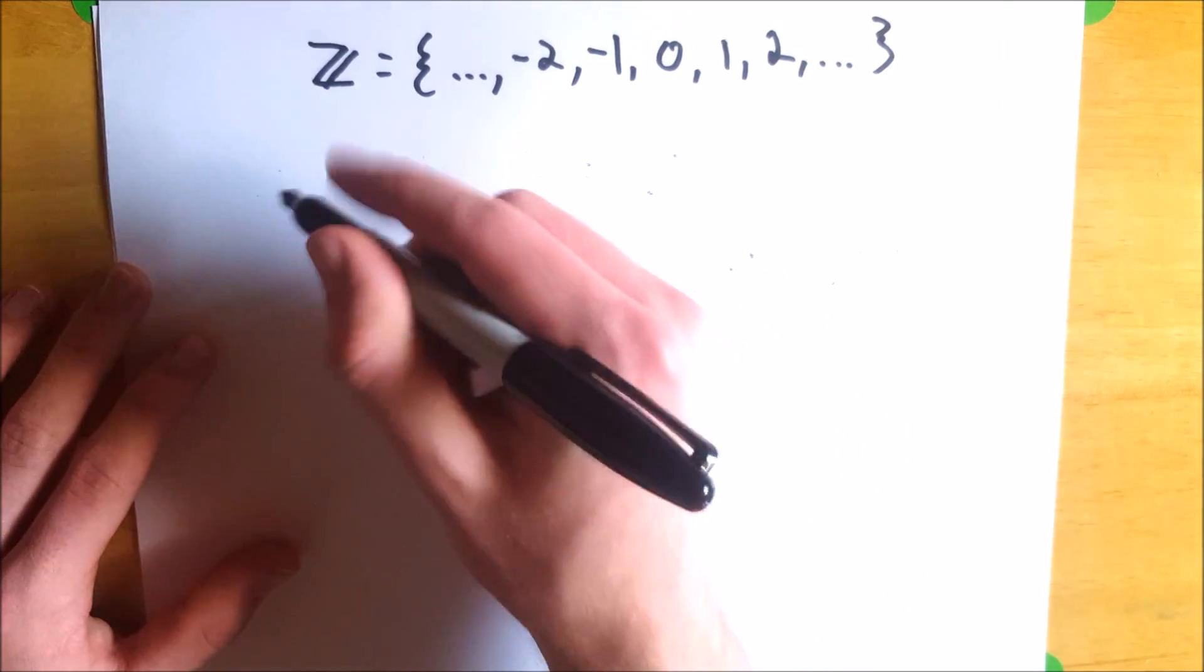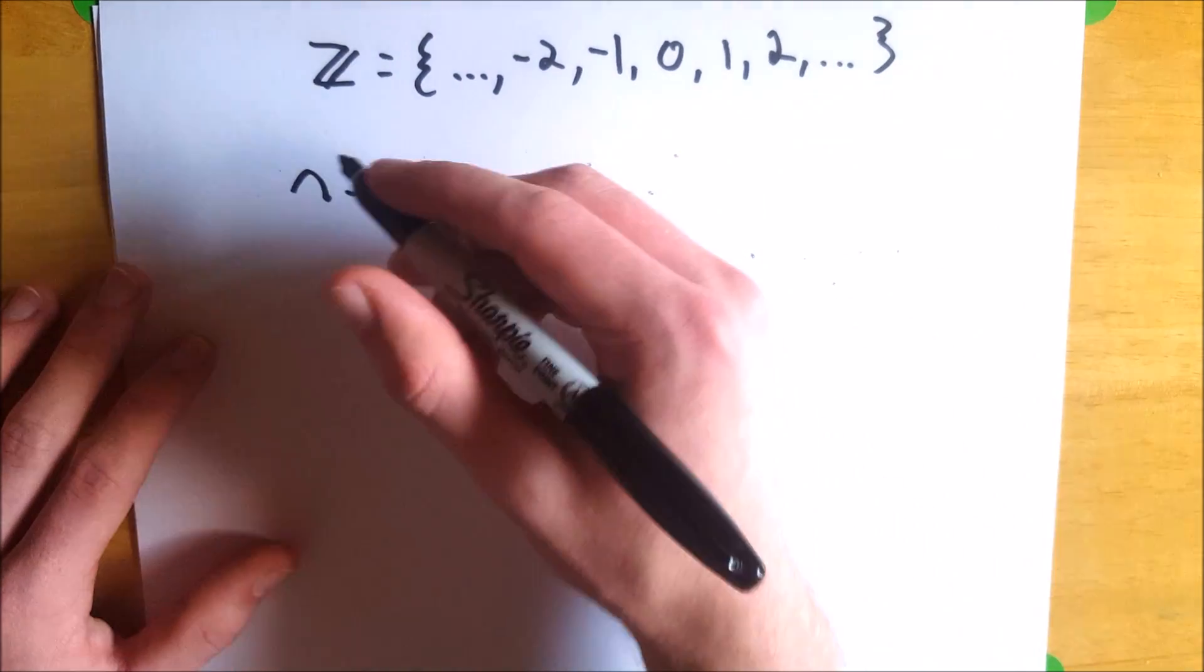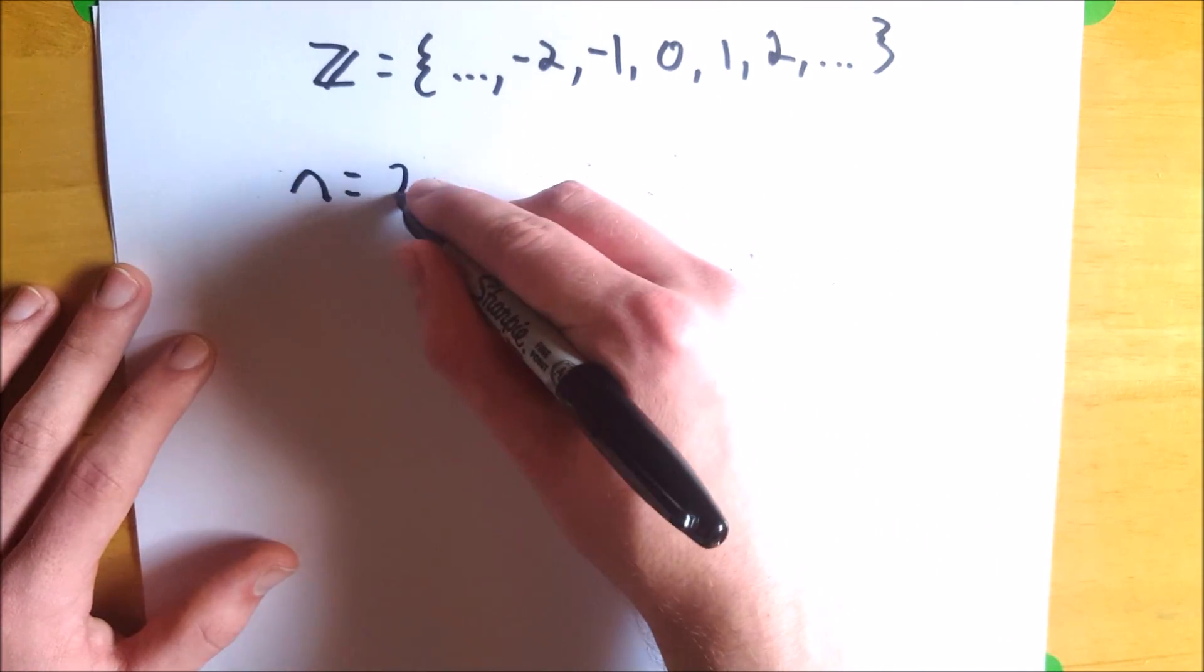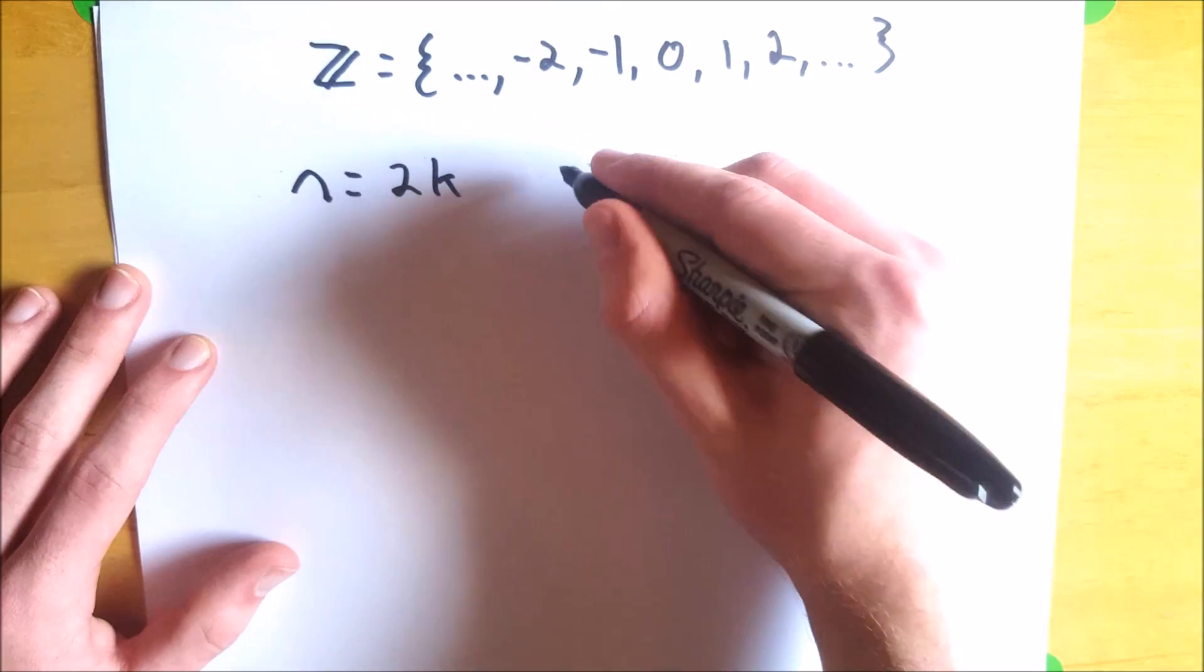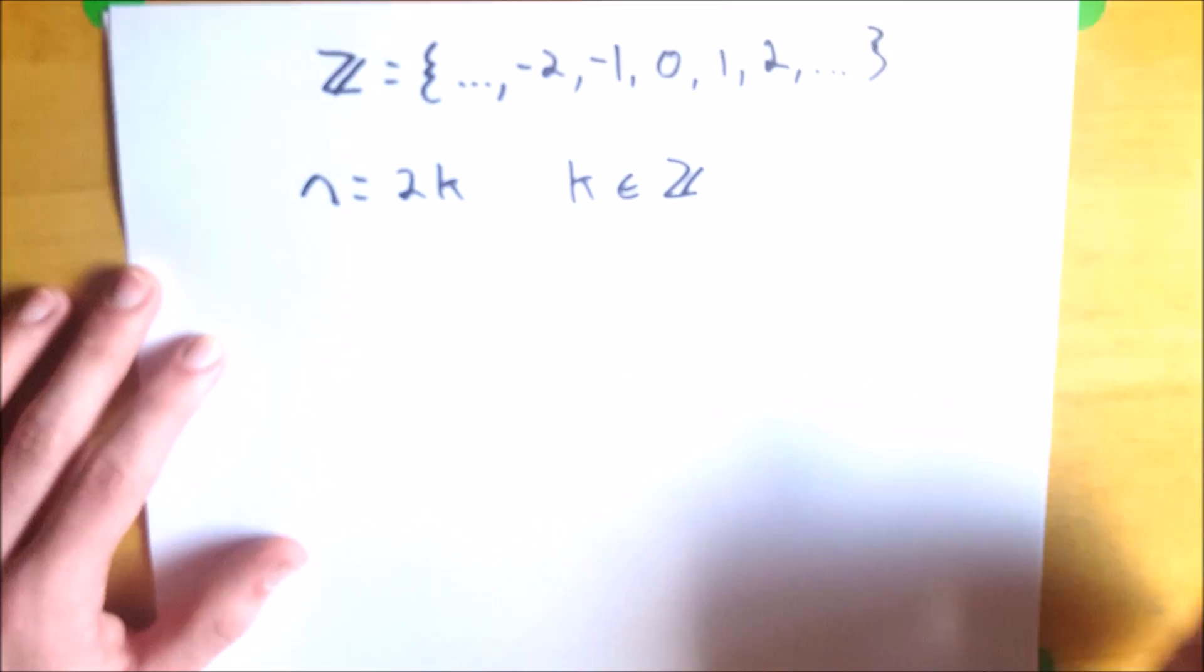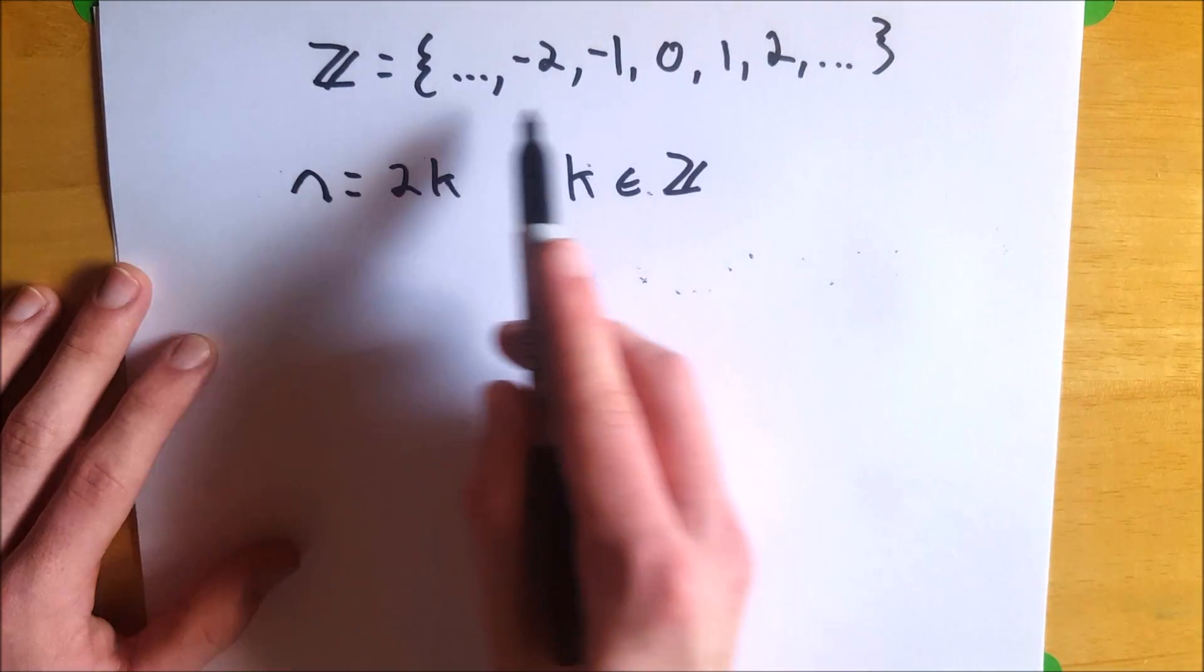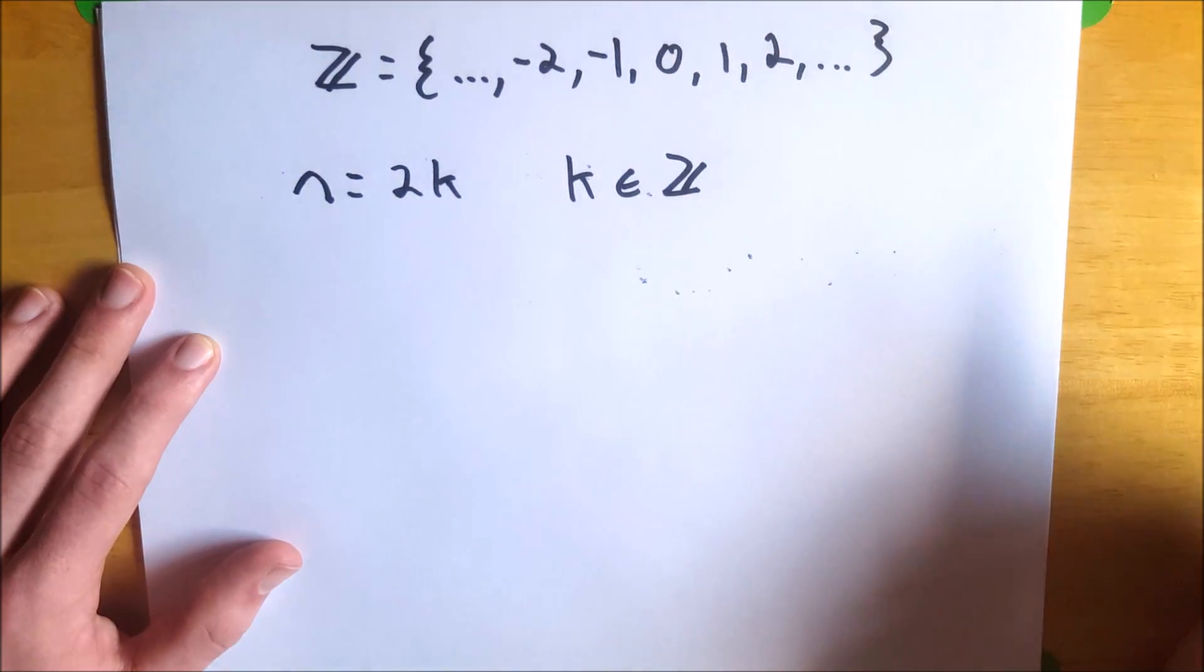An even number n is even if it equals 2k for some k that's an element of ℤ. If you don't know what ℤ is, it's the set containing all of the integers, which I've written up here to give you an idea.